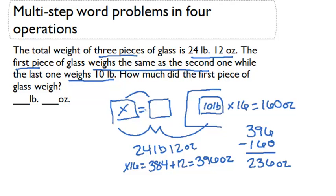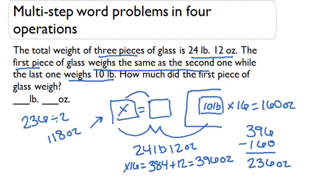Since the first and second pieces weigh the same amount, we can divide 236 by 2 to find the weight of each. 236 divided by 2 gives us 118 ounces for each piece of glass — both the first and the second.